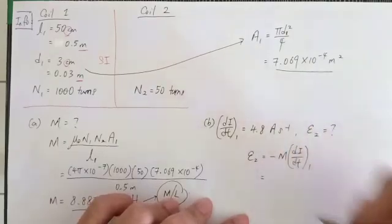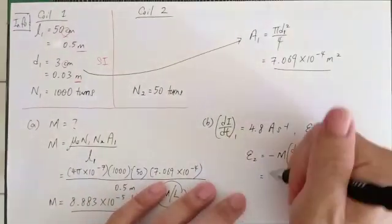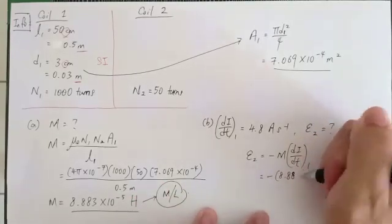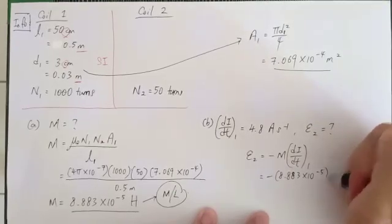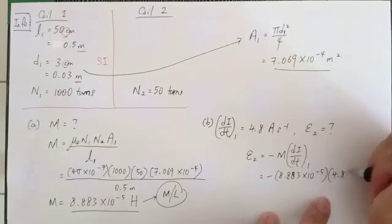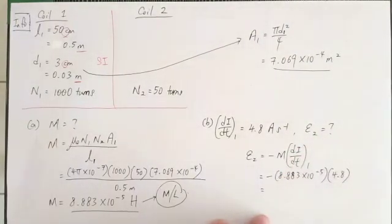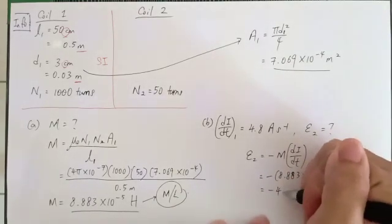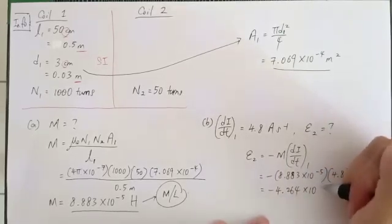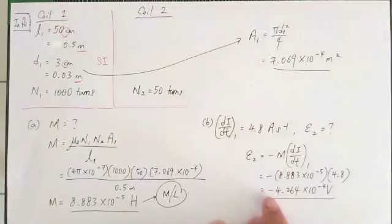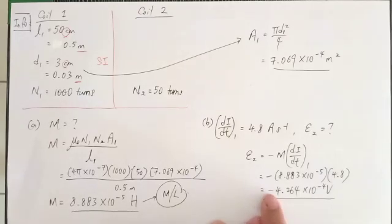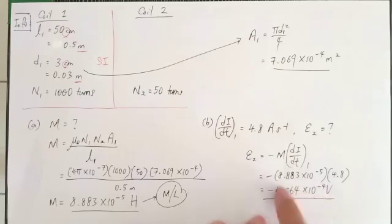Substituting the values: M = 8.883 × 10⁻⁵ H and dI/dt = 4.8 A/s, we get E2 = −4.264 × 10⁻⁴ V. The negative sign just indicates direction and is not very important here — we only look at the magnitude. So that is the answer for E2.